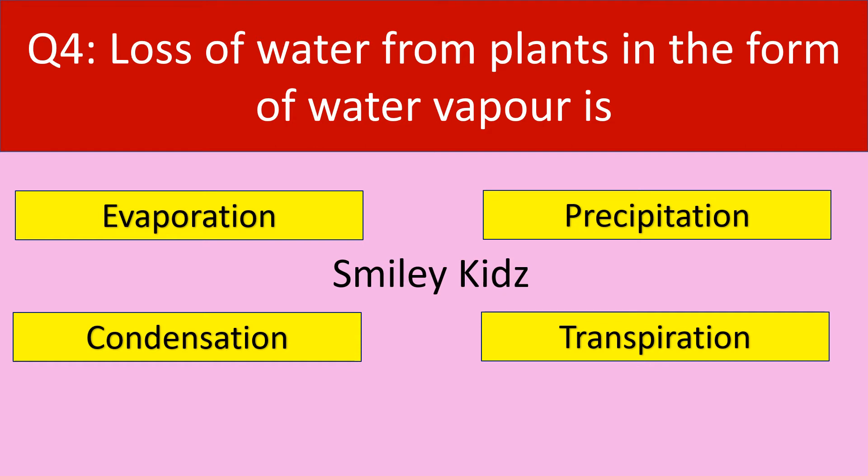Question number 4. Loss of water from plants in the form of water vapor is called — your options are: evaporation, precipitation, condensation, transpiration. Your time starts now.